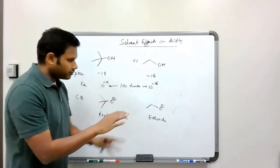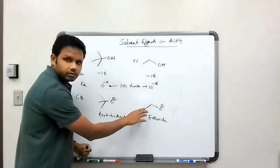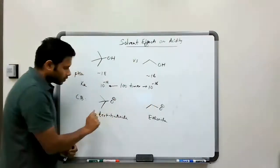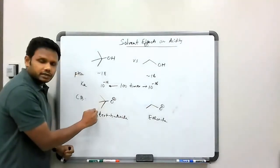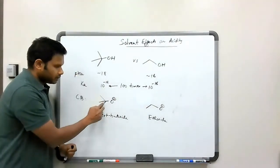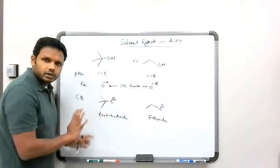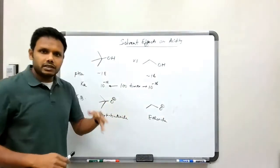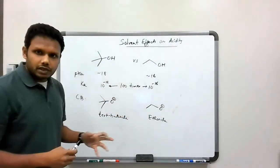This is an electron-donating effect. So the carbon-containing groups, they can donate electrons. But in this particular case, there are three carbon-containing groups connected to that carbon, and so more electron density gets pushed towards that oxygen atom.